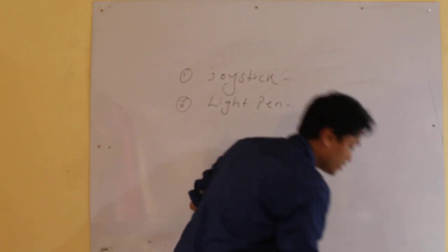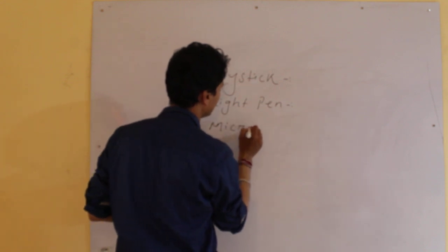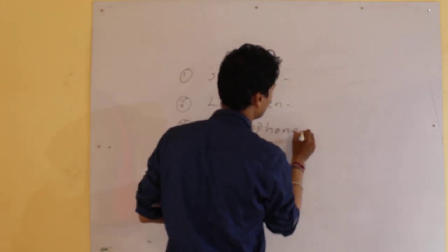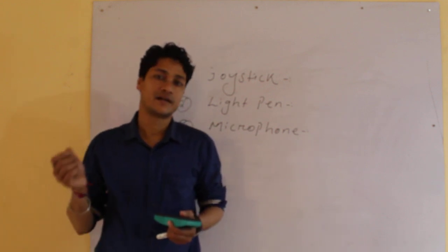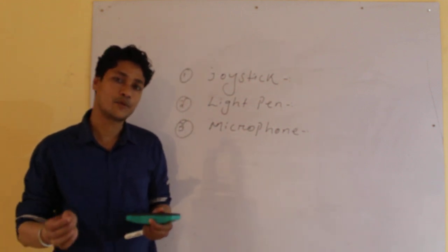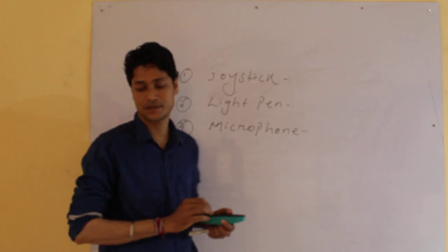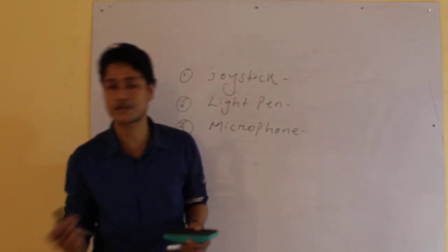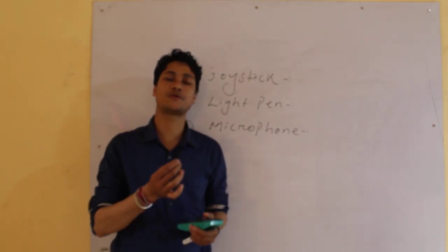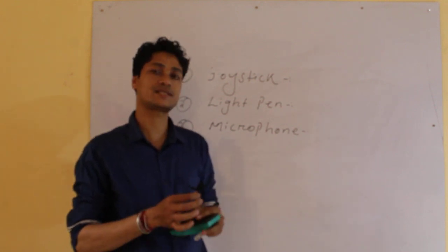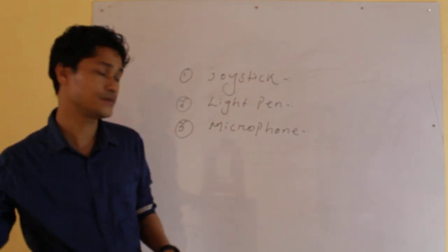Now the third one is microphone. Children, I think all of you have seen this microphone because during the school assembly most of you are conducting the assembly by using this microphone. See, here I am also using one microphone to prepare this video. This microphone takes our voice into the computer system. Did you understand what is microphone?